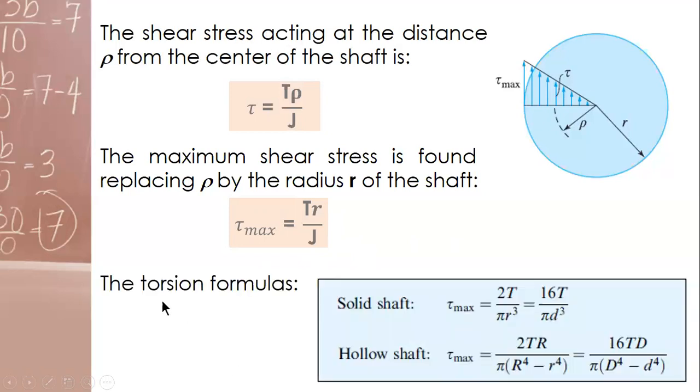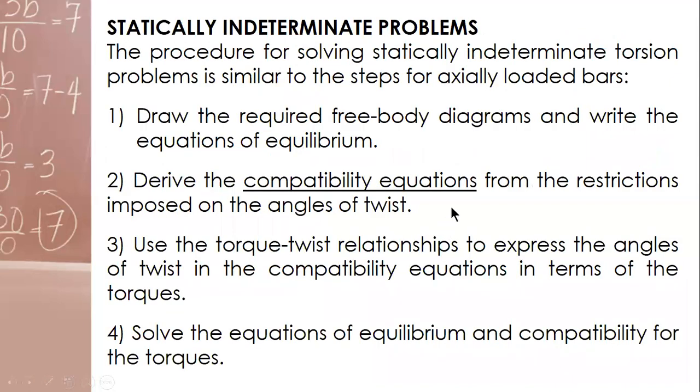So the formula for stress is tr over J, T rho over J. This is a variable stress because the stress is dependent on rho. So the smaller the value of rho, the smaller the value of stress. Based on this concept, if at the center, zero is the stress, because obviously the fiber at the center will not twist. It will remain in its place or position. The maximum one is at the outermost fiber where rho is equal to R. So tau max is T R over J. And if you want a simplified formula for solid shaft and hollow shaft, you can just replace J by the formula from earlier for solid and hollow shaft, and then you have the simplified formula.